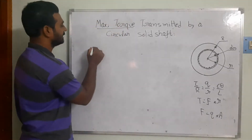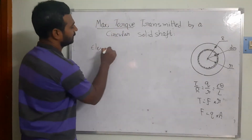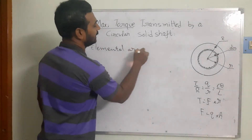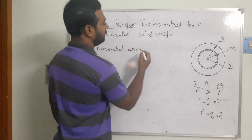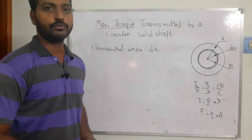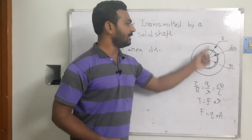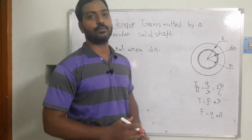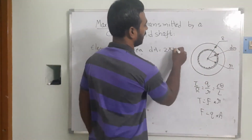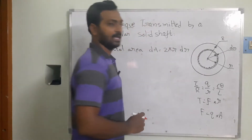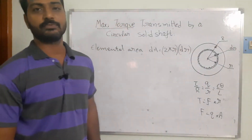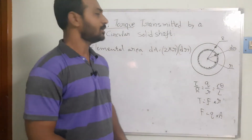First I am going to find the elemental area. The elemental area dA of this strip equals perimeter times thickness, which is equal to 2πr·dr. These give us the area in units of mm squared.